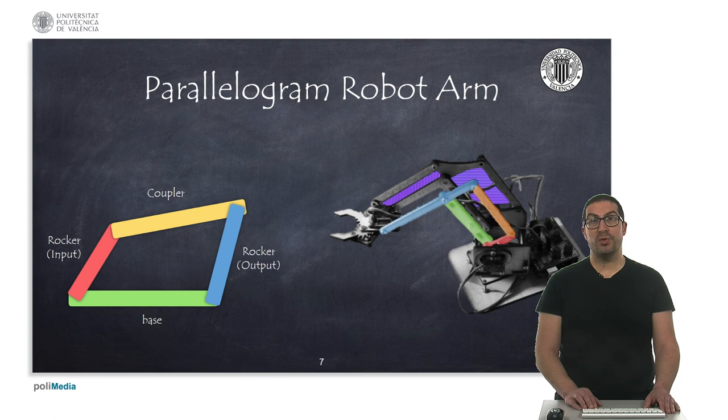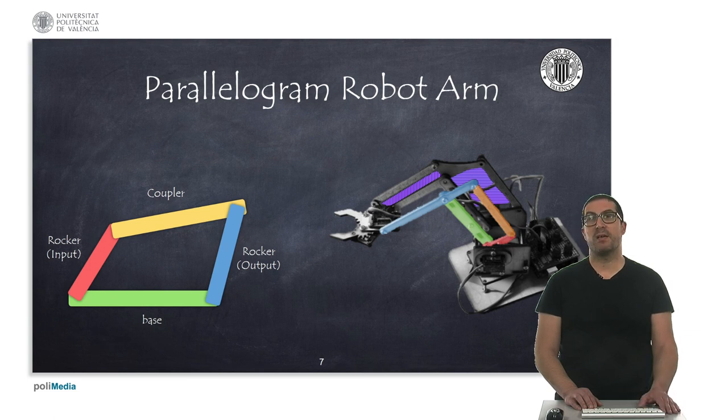In green, we have link 2 in a typical robot arm. For the moment, we will assume that this is fixed, in this case the base of the four linkage mechanism. In red, I have colored the input link 3 that is connected to the servo motor that indirectly moves the output link 3, colored in blue. The orange bar is the coupler.